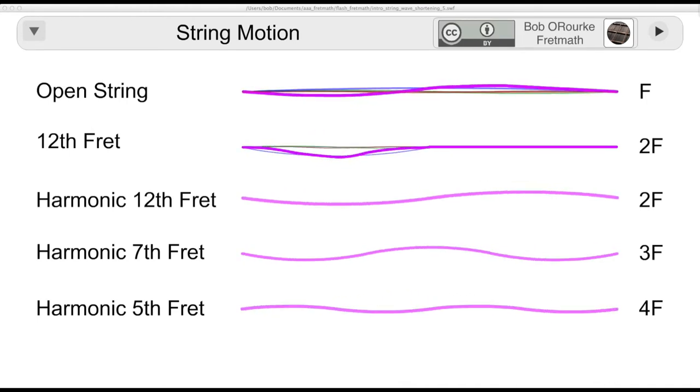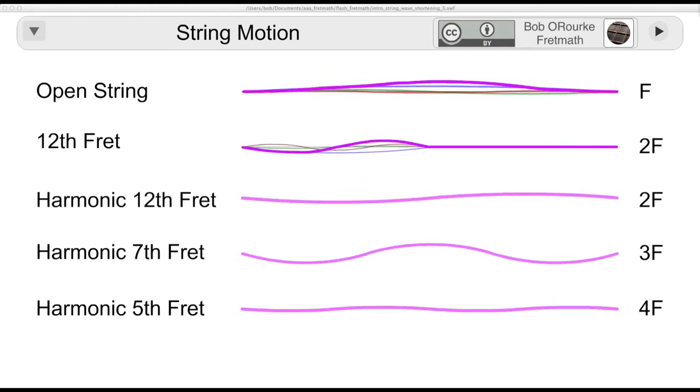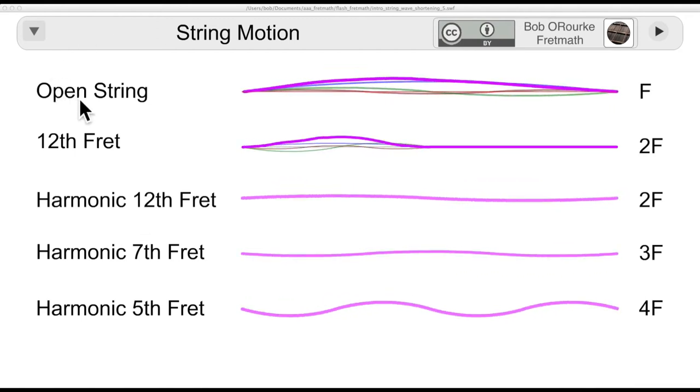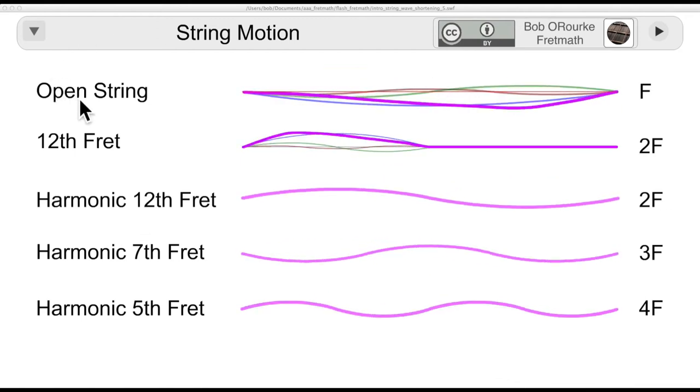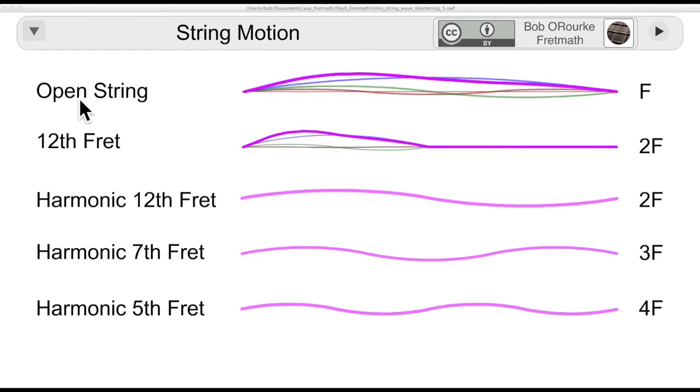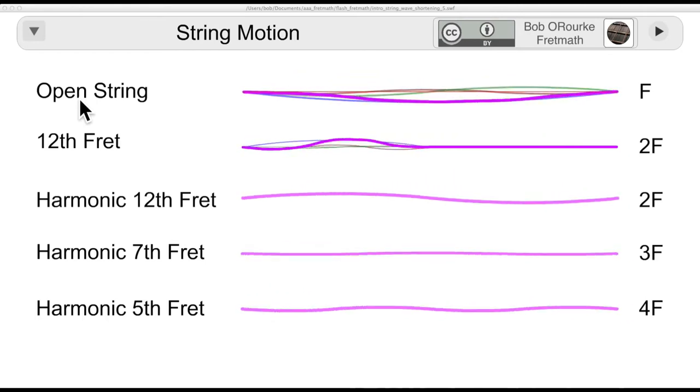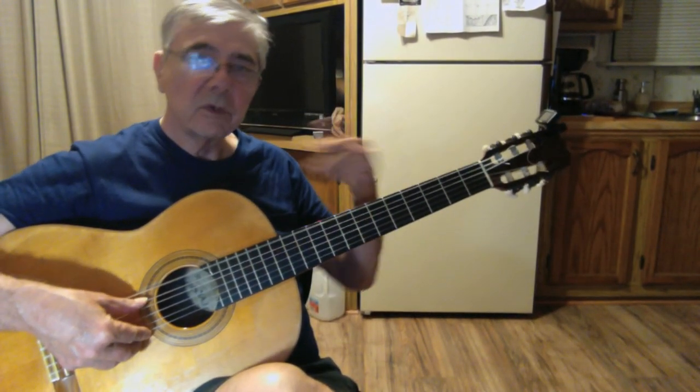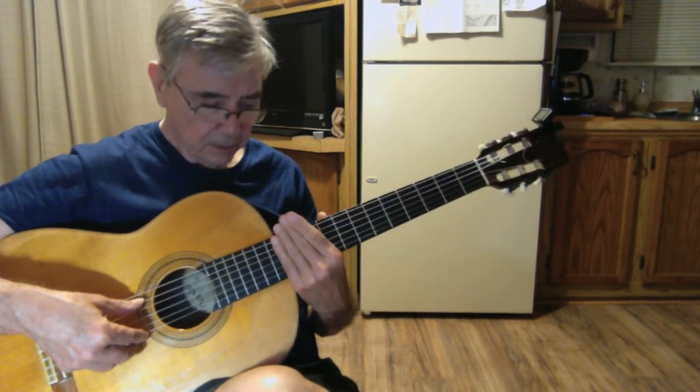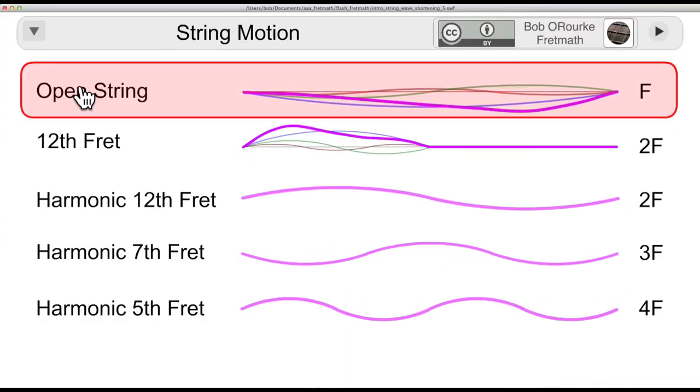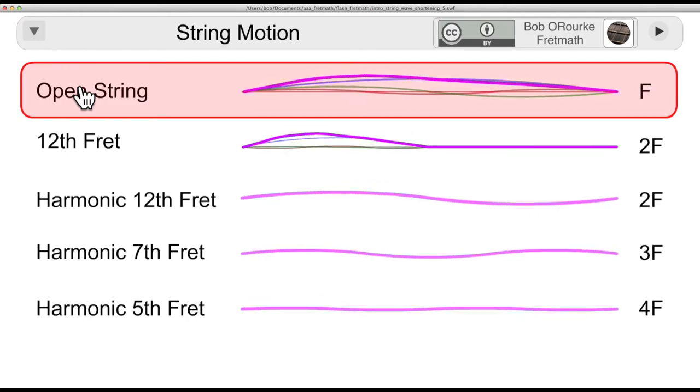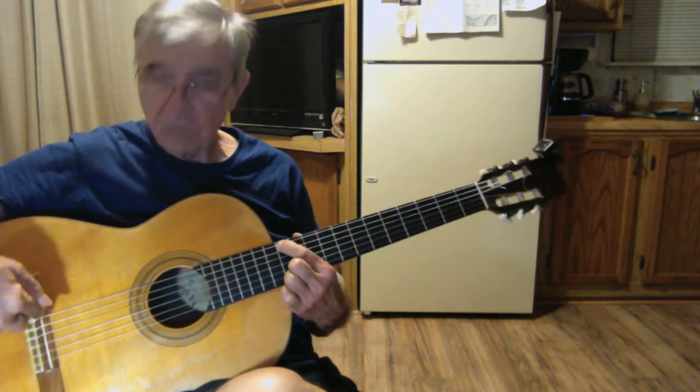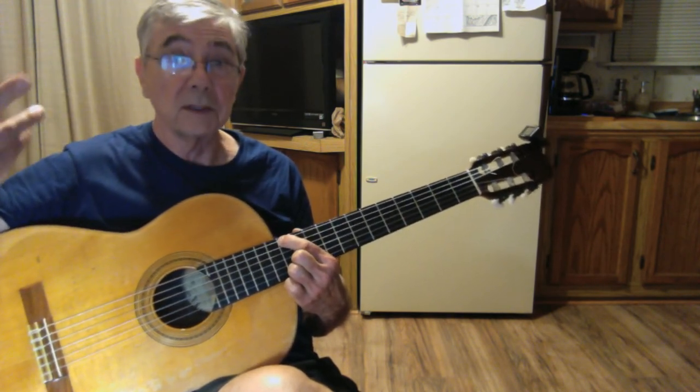A couple of ways the string vibrates, either an open string or a fretted string, they carry all of the upper harmonics with them. If you touch the string lightly at a critical point, you reduce the entire vibration pattern to a single frequency, a single partial, a single pure partial. Open string, the entire string is vibrating with all the upper harmonics.